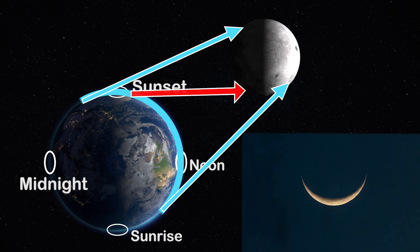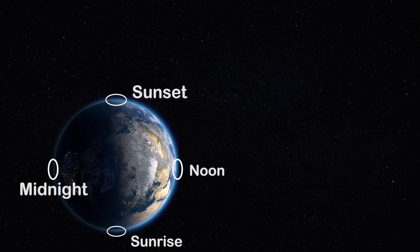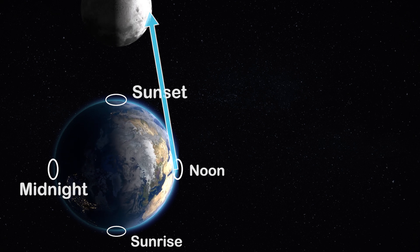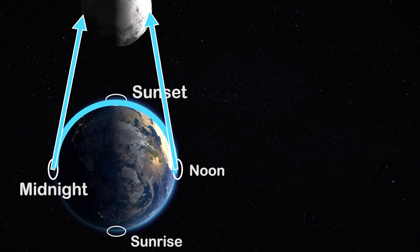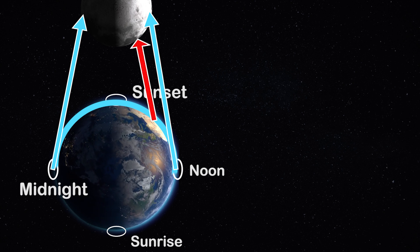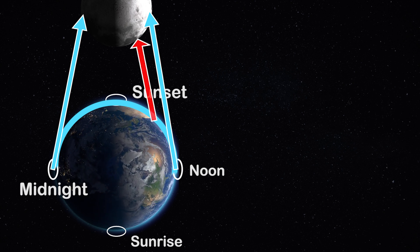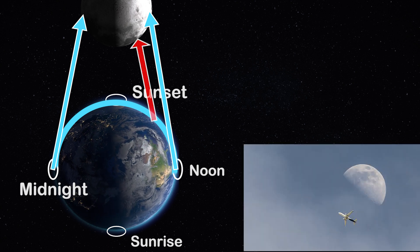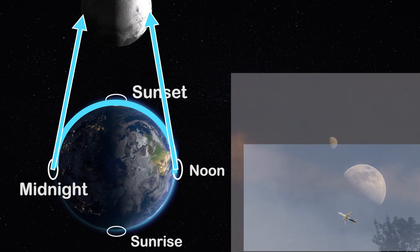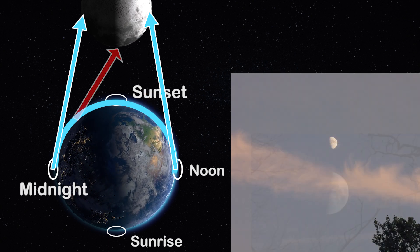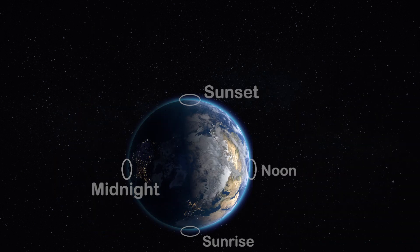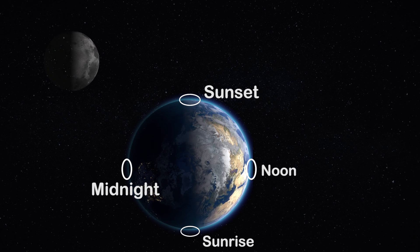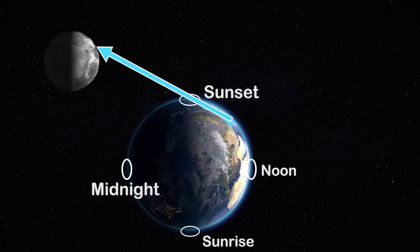The first quarter Moon rises during noon and continues to be visible till midnight. From noon to sunset, since the sky is illuminated by the Sun, we may not notice it, but after sunset we will start noticing it till midnight. Waxing gibbous starts appearing to us after noon and continues to be visible past midnight.